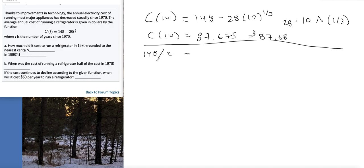Now we're plugging in for the cost side of the equation and solving for time, because it's asking for when. So that will look like 74 equals 148 minus 28t to the one-third. To solve this, we need to isolate the root part.